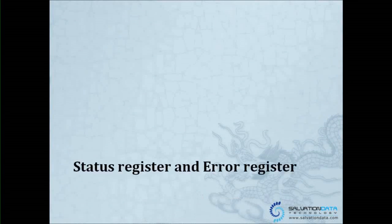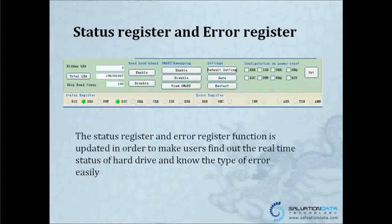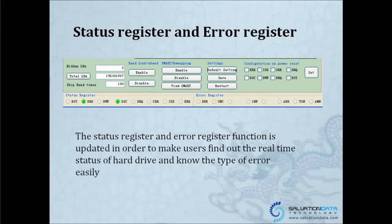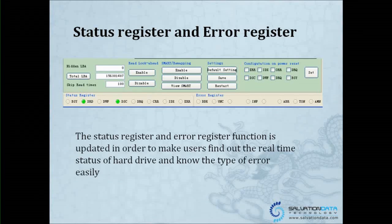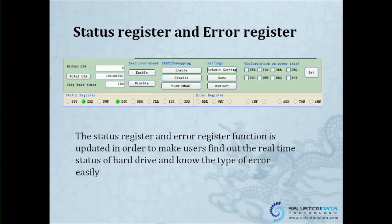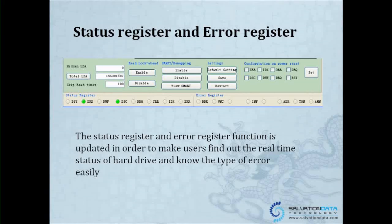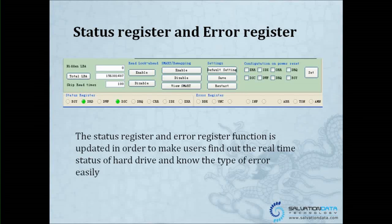The next function is status register and error register. This function is updated in order to make users find out the real-time status of the hard drive and other types of errors. When you do a real case, you'll find different abbreviations on the DataCampus console — like ERR or IDX — blinking or shown in red, which means there's a problem. If a problem shows up, you just click on the configuration for power reset, check the settings, click reset, and you can solve the problem.